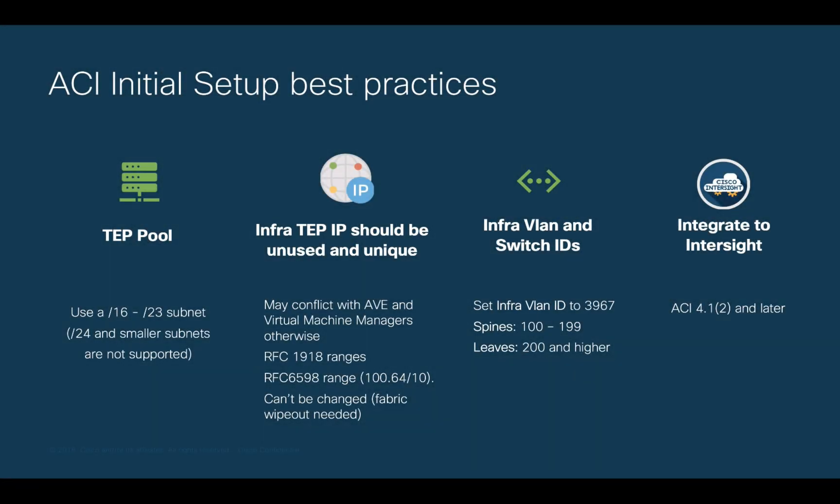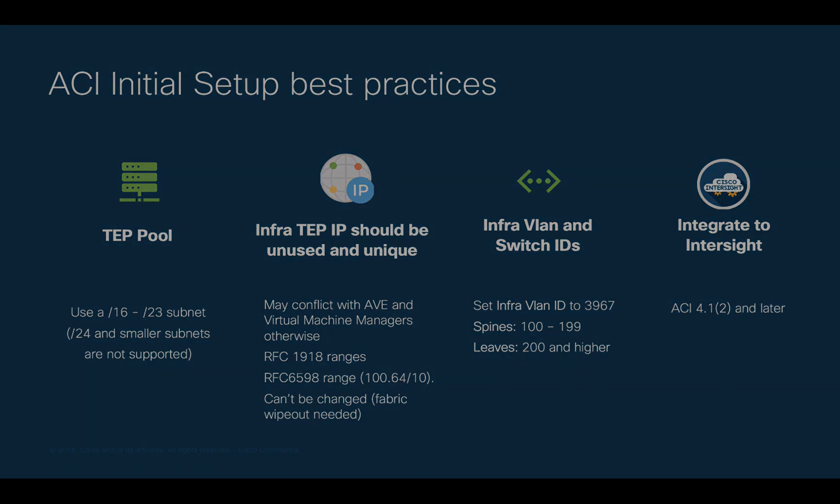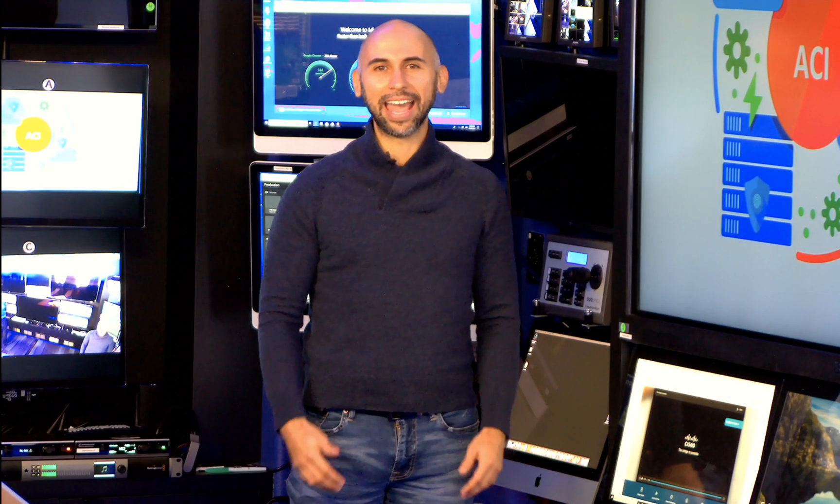Always keep in mind these four best practices when configuring your ACI environments for the first time, and you should be good to go. We can now start creating our physical network configuration, as we will show in the next module. ACI provides you with a better, simpler, and secure network — any size, anywhere, and on any cloud. If you want to learn more about other common tasks and how ACI radically simplifies network provisioning and operations, please watch the rest of the videos in this series.